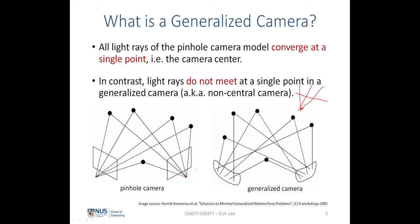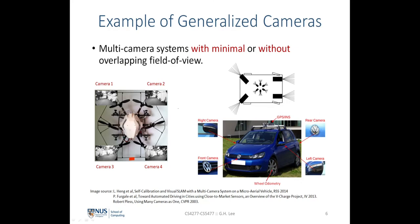In contrast, light rays do not meet at a single center of convergence in the generalized camera. We can think of a generalized camera where the lens is a general shape — something like a funhouse mirror of arbitrary shape. This means that the light rays being projected into the cameras do not meet at a single center of projection. This funhouse mirror lens that projects light rays into an arbitrary configuration does not exist in reality, but a generalized camera can be realized with a multi-camera system with minimal or no overlapping field of view.